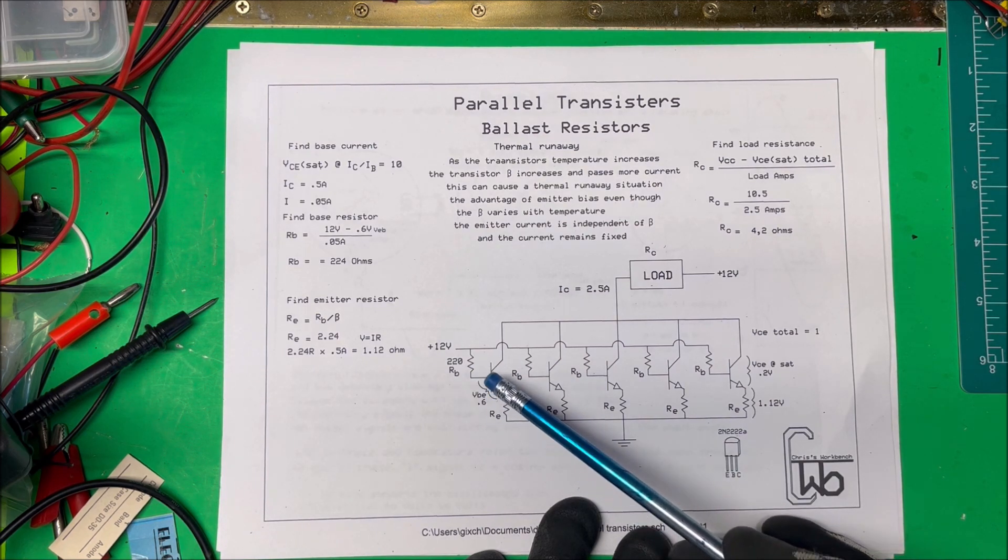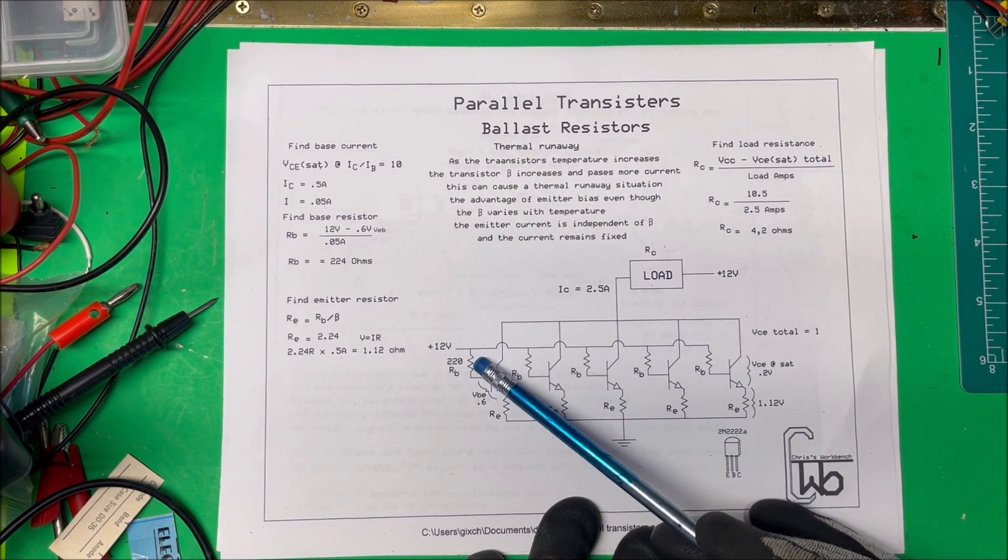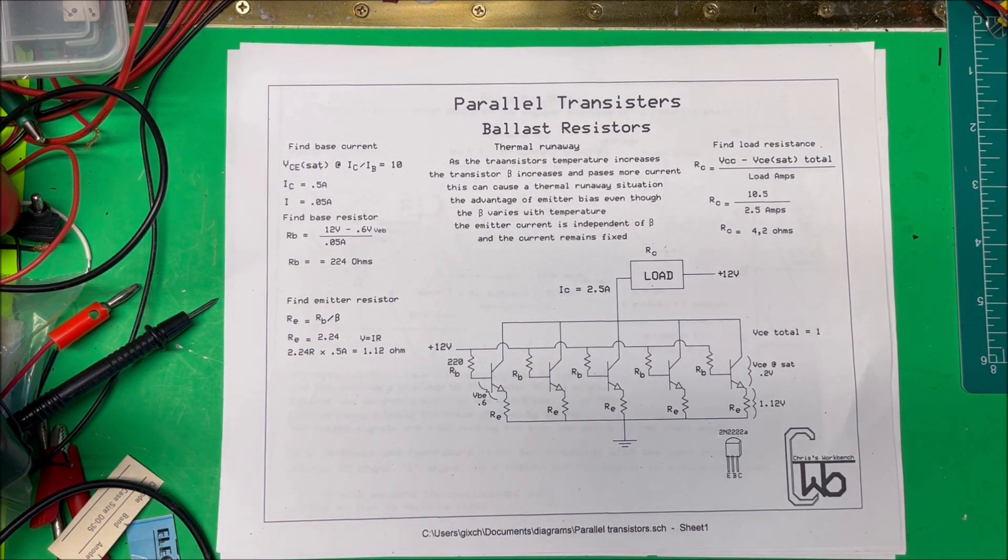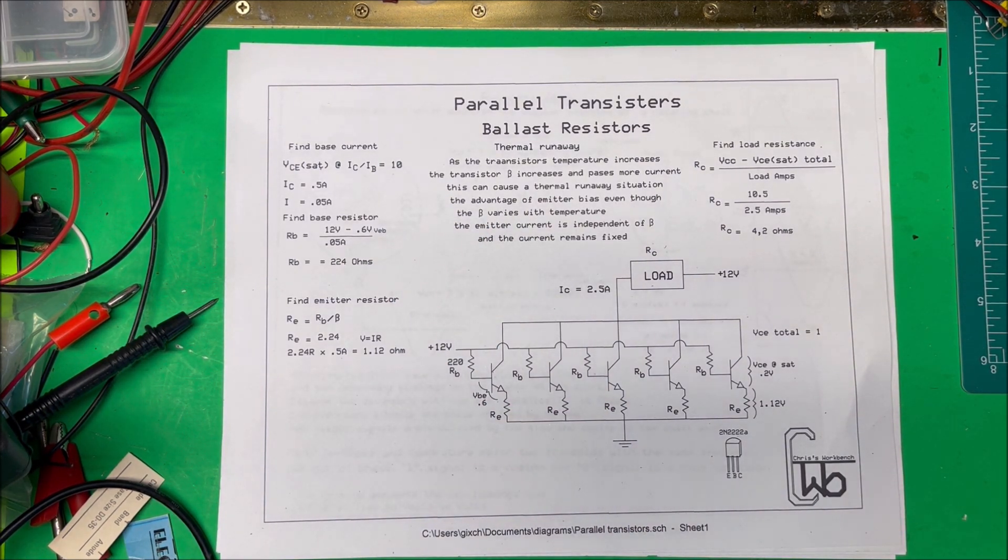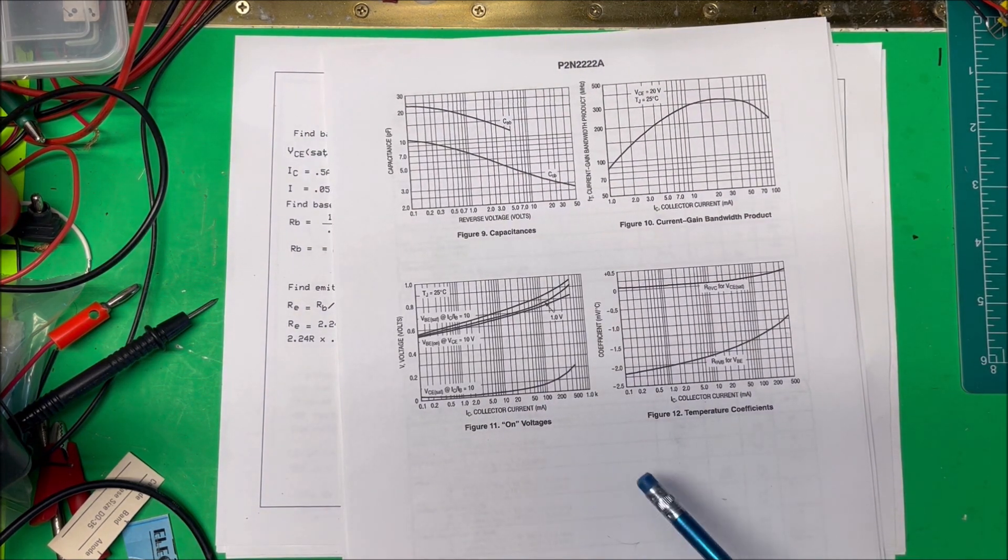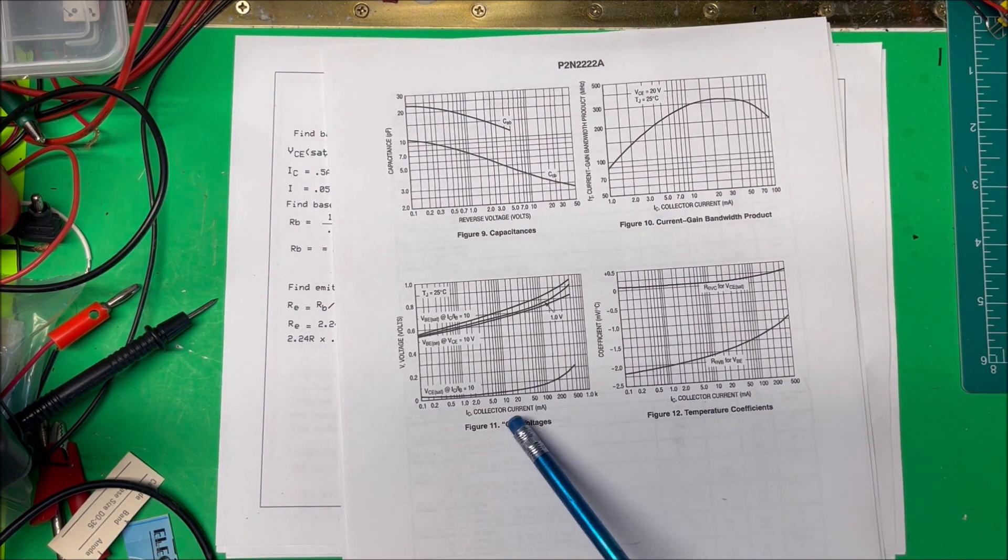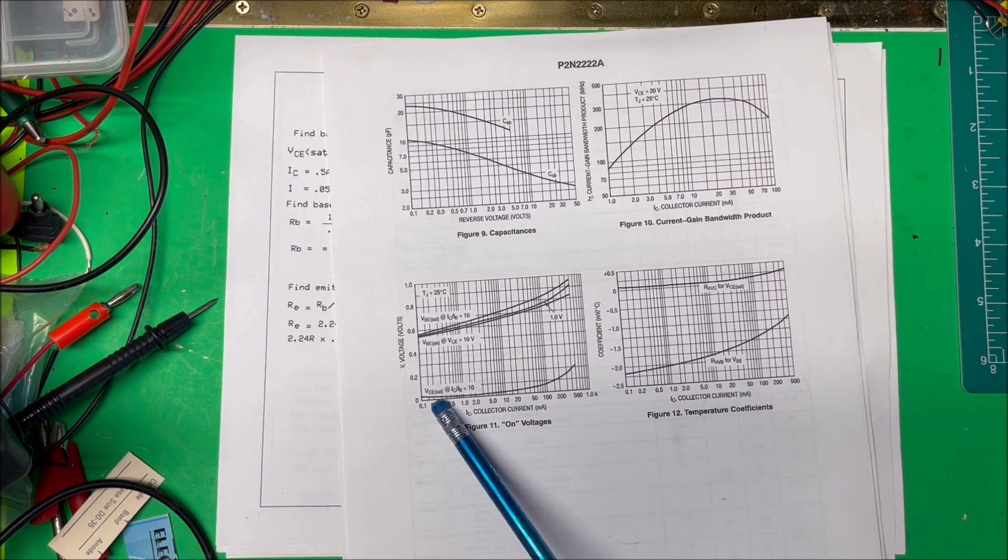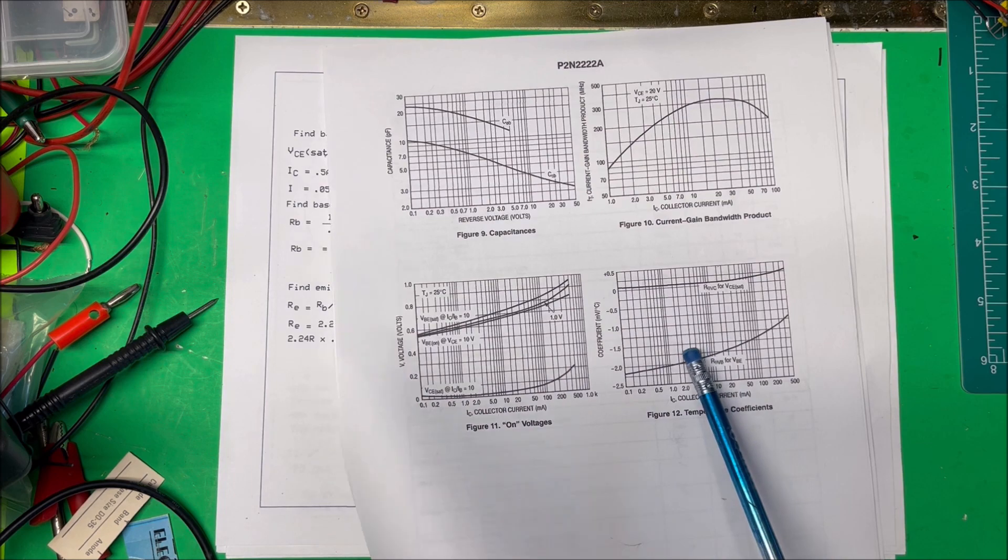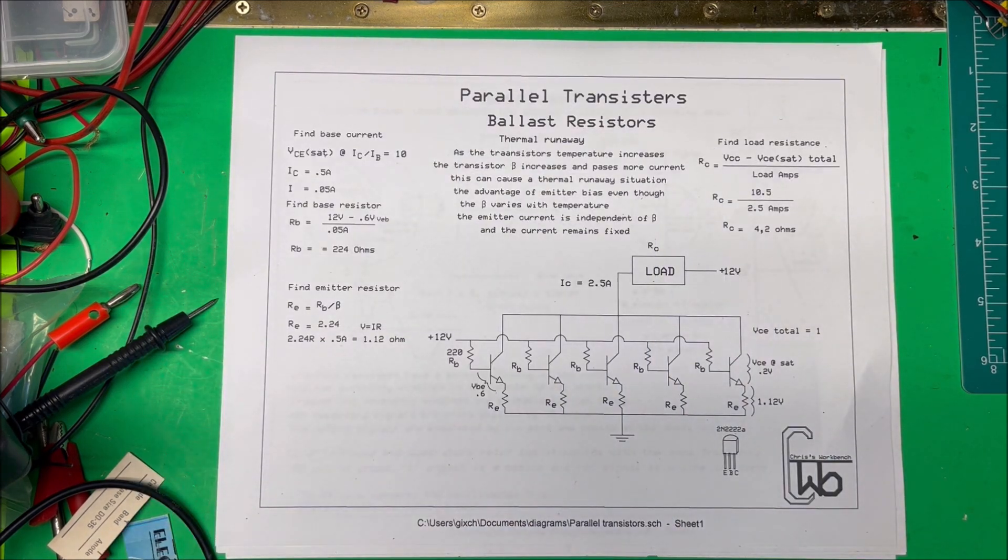So now to find the base resistor, there's better ways to do it than what I did, but I'm just giving me a ballpark figure here. Here on the data sheet on voltages, it says that VCE voltage from collector to emitter saturation, the base current is 10 times less than the collector current. So I'm just going to go with that.